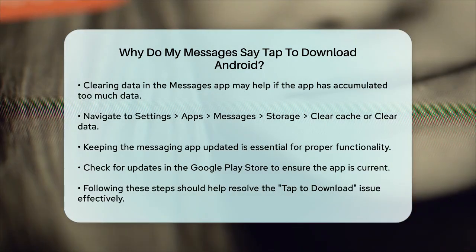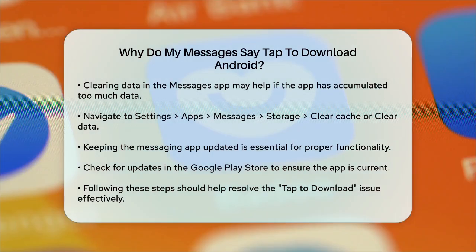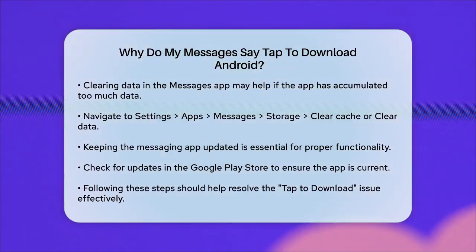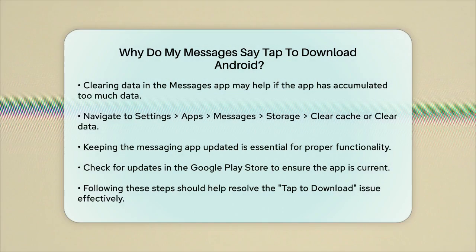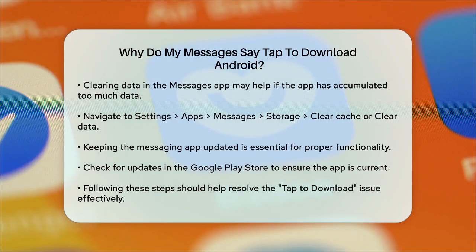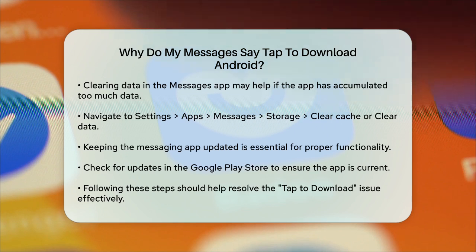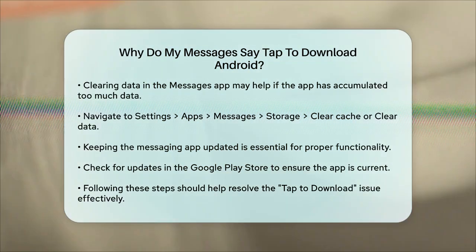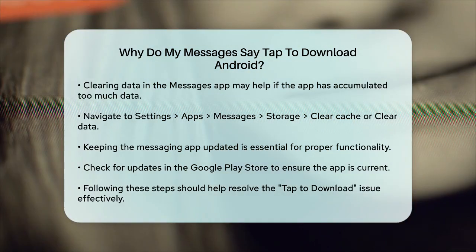Lastly, ensure that your messaging app is up to date. An outdated app can cause various issues, including problems with downloading MMS messages. Check the Google Play Store for any updates to your messaging app. By checking these settings and taking these steps, you should be able to resolve the tap-to-download issue and get your MMS messages working smoothly again.